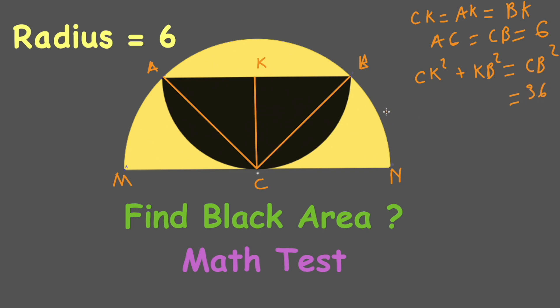Since KB equals CK, we have CK² plus CK² equals 36, which means 2CK² equals 36. Therefore, CK² equals 18, and CK equals 3 times the square root